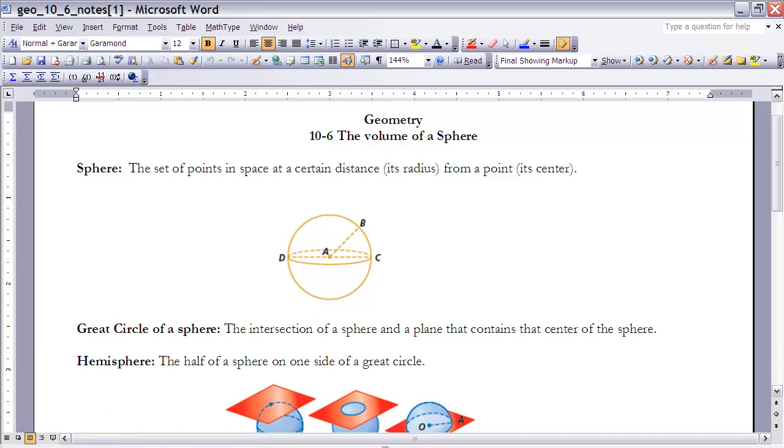All a sphere is is basically a three-dimensional circle. When we talk about a circle, we say a circle is all points in a plane the same distance from a given point which we call its center. That distance we call its radius.